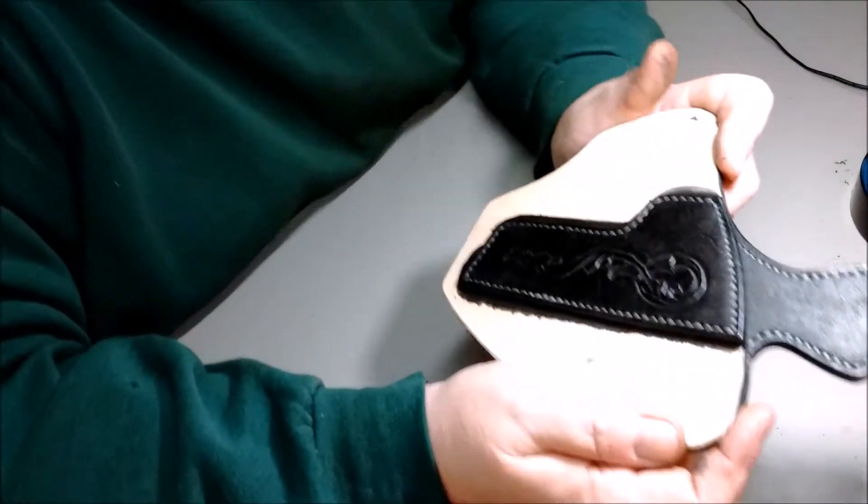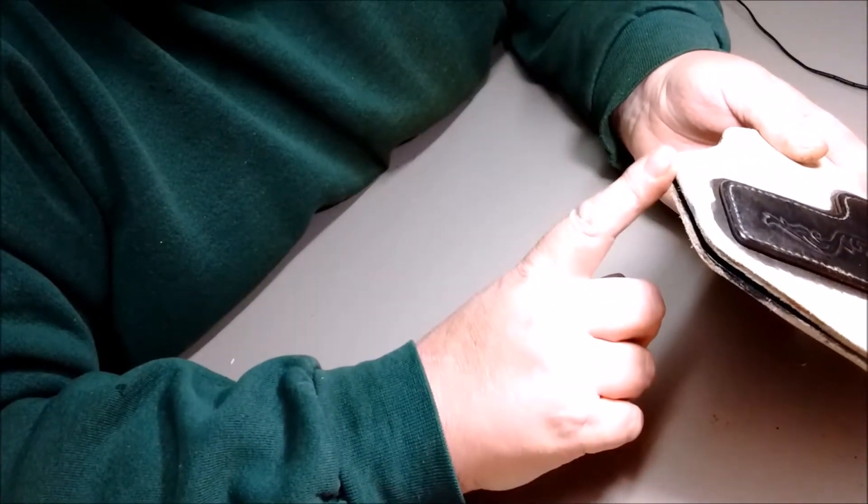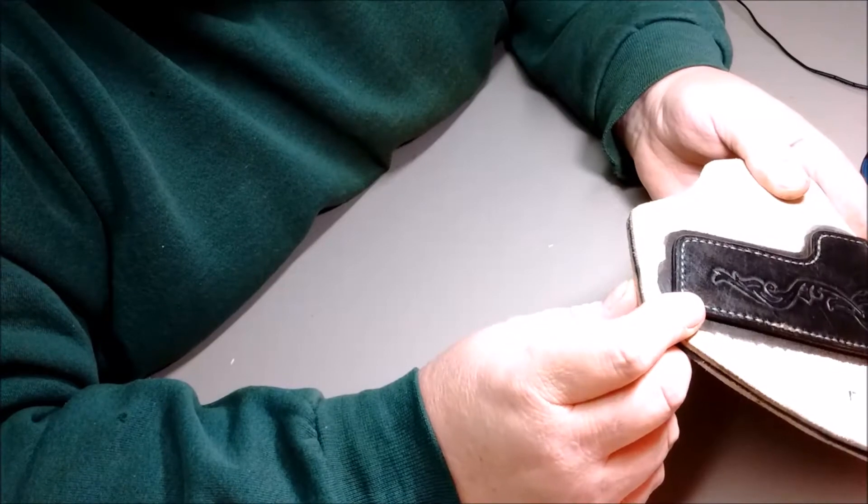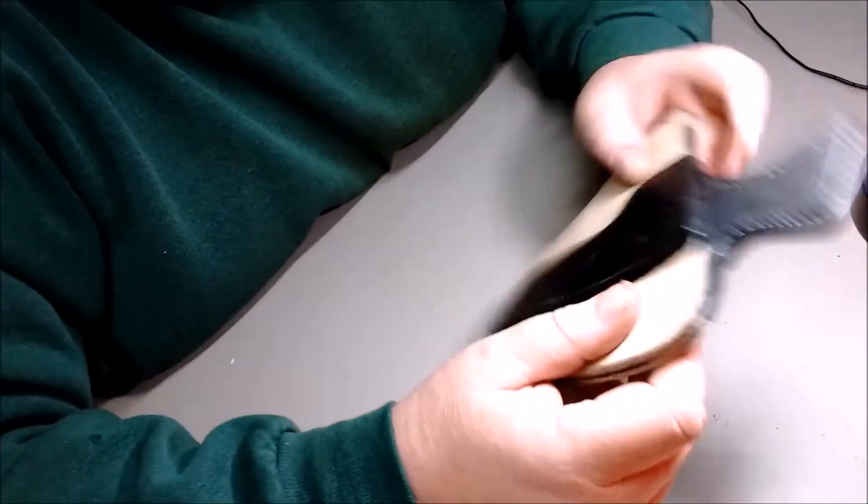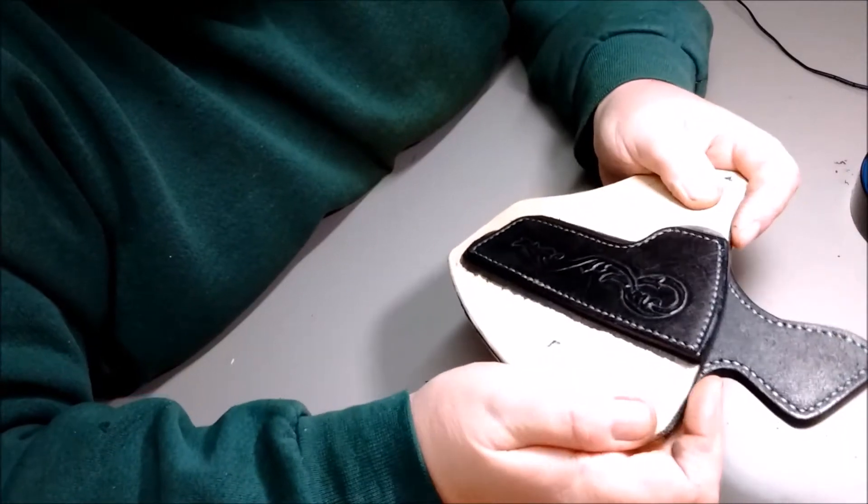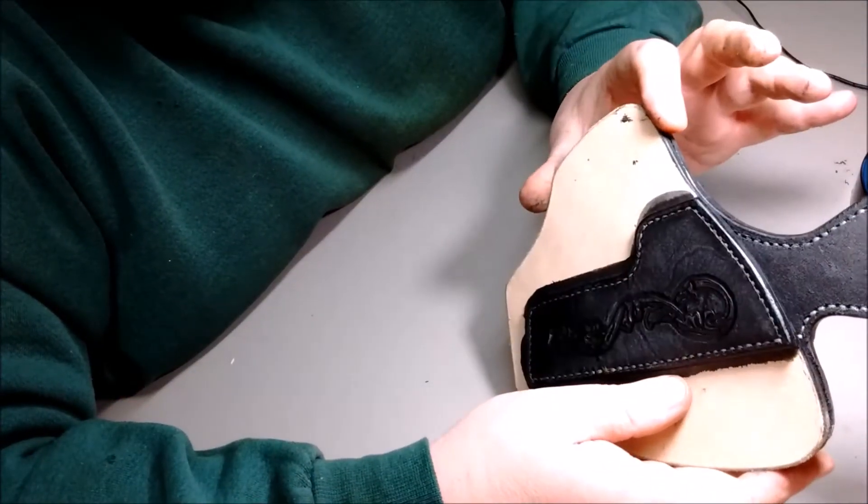Next thing we're going to do is I have to burnish a little down here because I won't be able to do that when it's completed. Finish up my burnishing around everything else that needs to be burnished now before it gets finished. And then we'll stitch her all together, glue it up and stitch it.